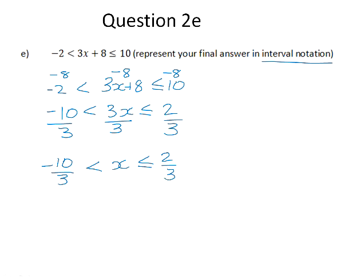We get X to be bigger than negative 10 over 3 and smaller than or equal to 2 thirds. As an interval, we always write our smallest number on the left and our biggest number on the right separated by a semicolon. If X is just greater than negative 10 over 3, it means negative 10 over 3 is not included, so it gets a round bracket. But X is smaller than or equal to 2 thirds, which means it is included, so it gets a square bracket.